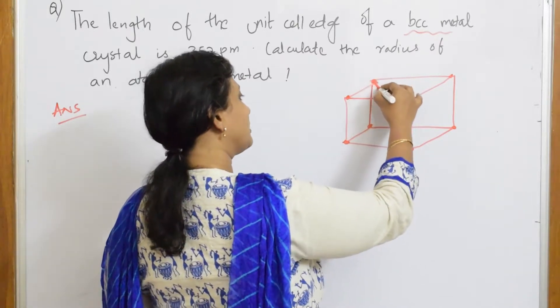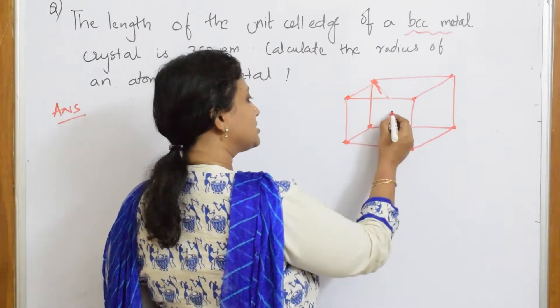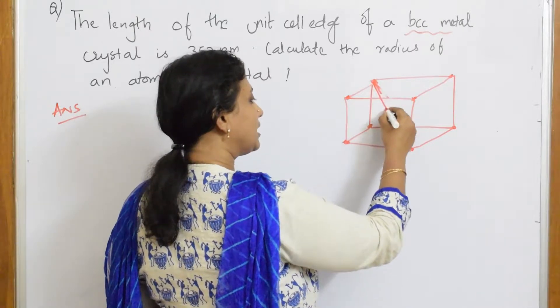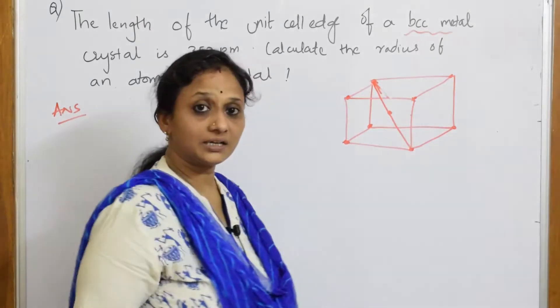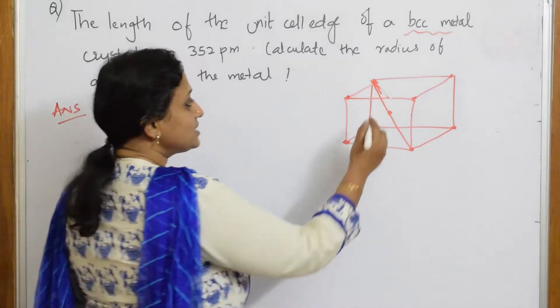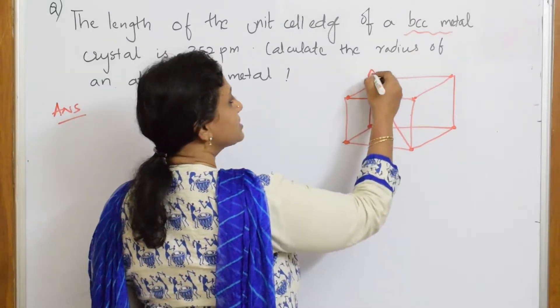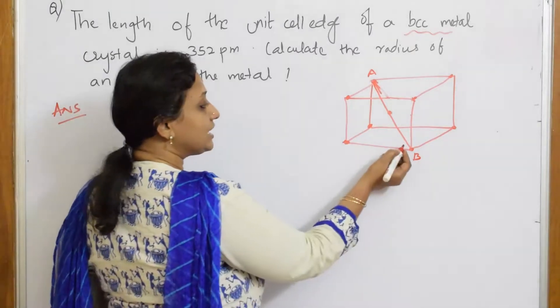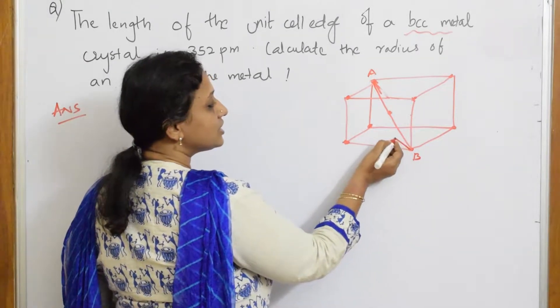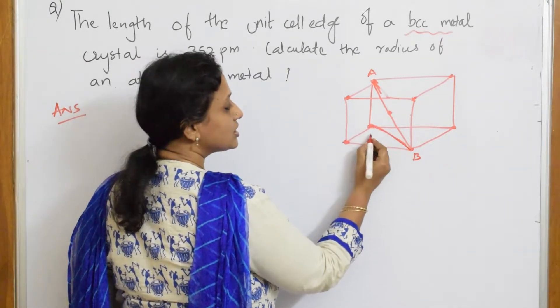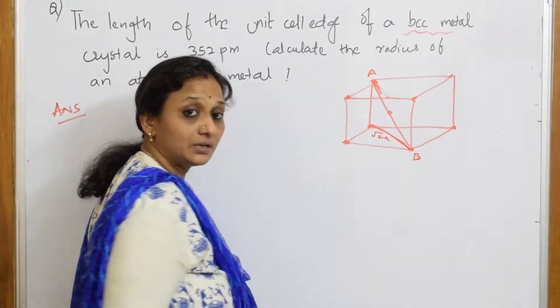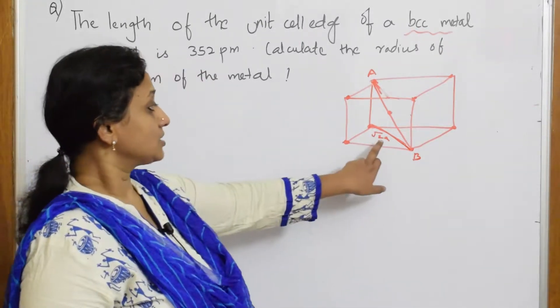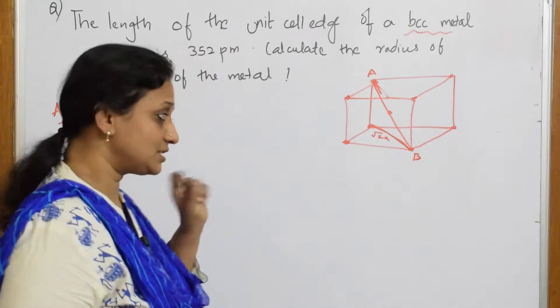Now once I make this diagonal, let me label this as A and B. We already know - we've calculated in packing efficiency - when I join this according to Pythagorean theorem, I found this is √2a. Remember this? This is what we did in packing efficiency.